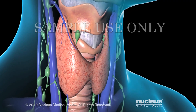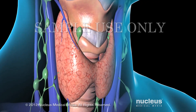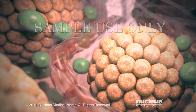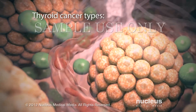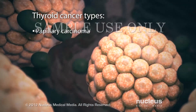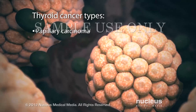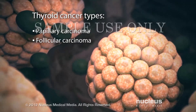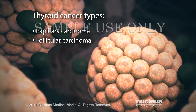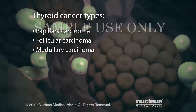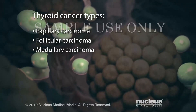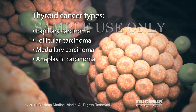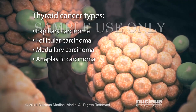If you have thyroid cancer, it may be one of four types, depending on the type of thyroid cell in which the cancer started and the appearance of the cancer cells. Papillary carcinoma is the most common thyroid cancer and begins in follicular cells. Follicular carcinoma accounts for 1 in 10 cases and also begins in follicular cells. Medullary carcinoma is less common and starts in parafollicular cells. Anaplastic thyroid carcinoma is a rare, more dangerous form of thyroid cancer.